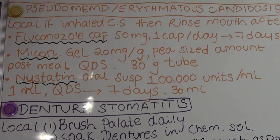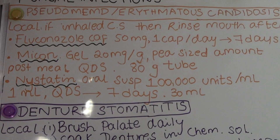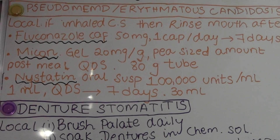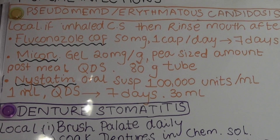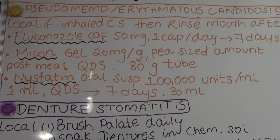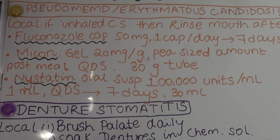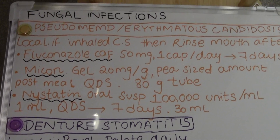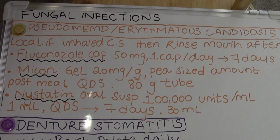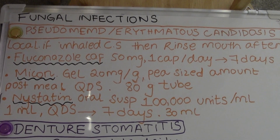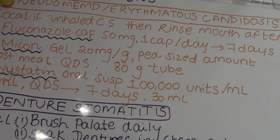For patients on warfarin or statins, they can be given nystatin oral suspension instead. Nystatin oral suspension is given as 100,000 units per ml — one ml four times a day. Ask the patient to rinse with one ml four times a day for seven days, which we dispense as 30 ml. Both pseudomembranous and erythematous candidosis treatments are generally carried out over a period of a week.